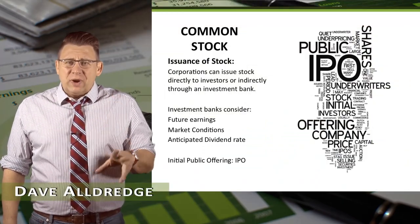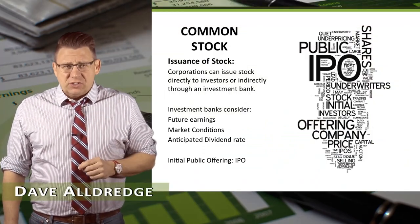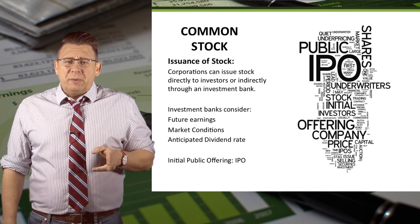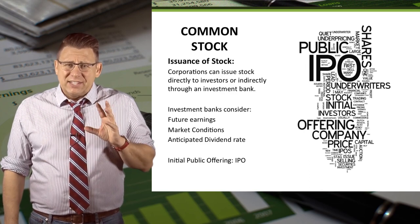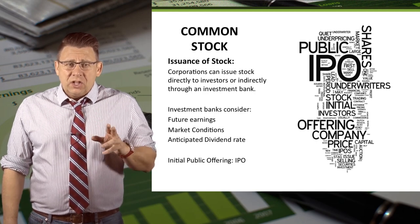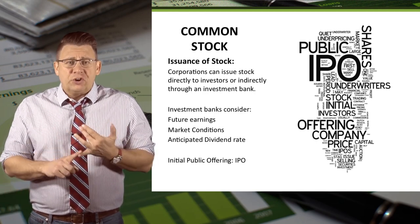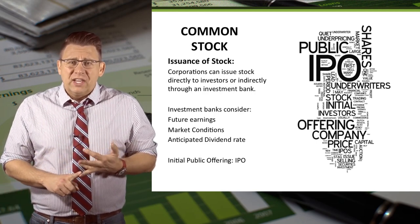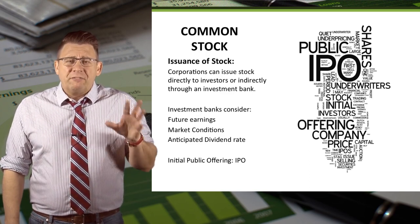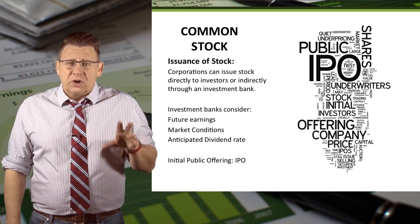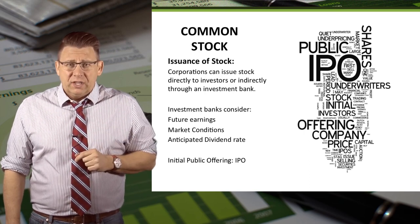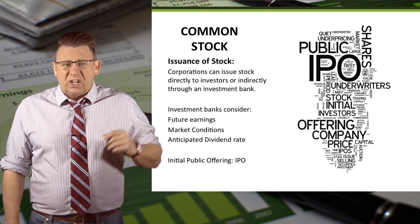Corporations can issue stock directly to investors or indirectly through an investment bank. Investment banks consider several factors when trying to set the initial stock price, including future earnings, market conditions, and anticipated dividend rates. If you've ever heard the term IPO, this means initial public offering, and it's what we're talking about here.